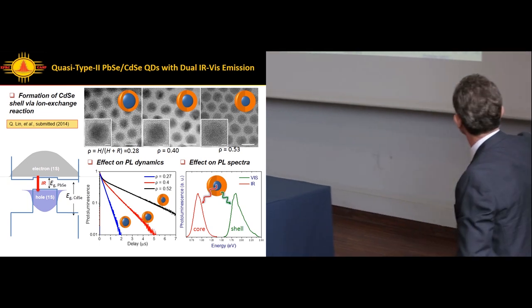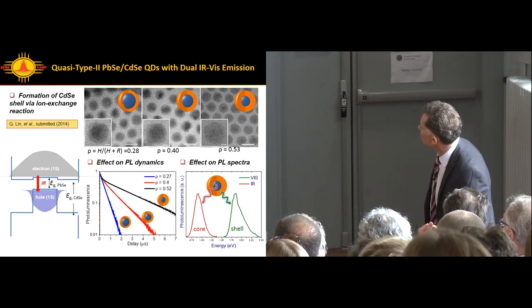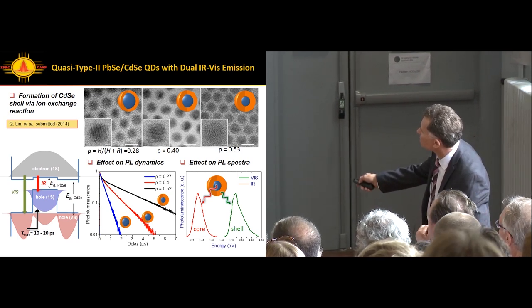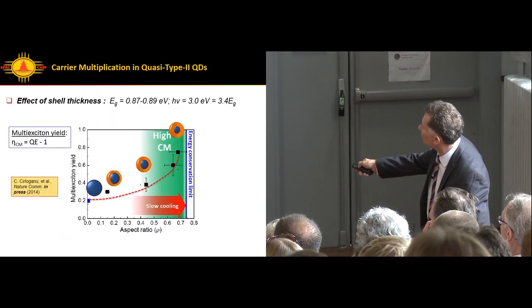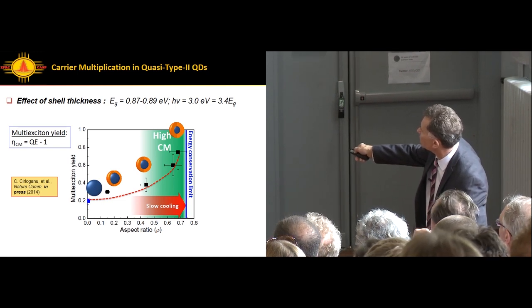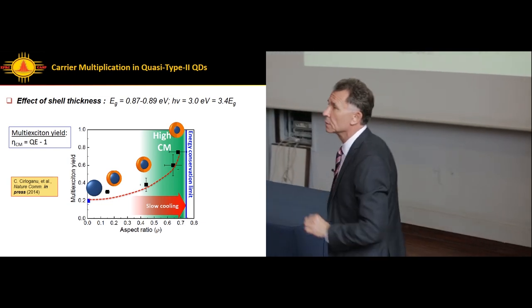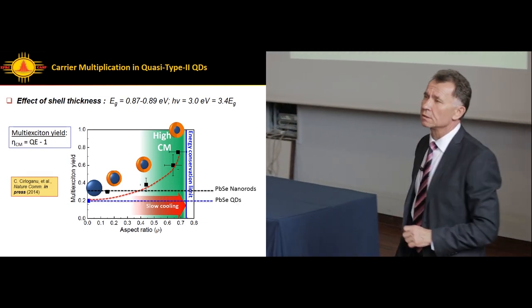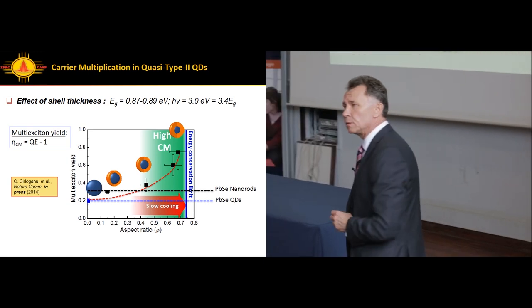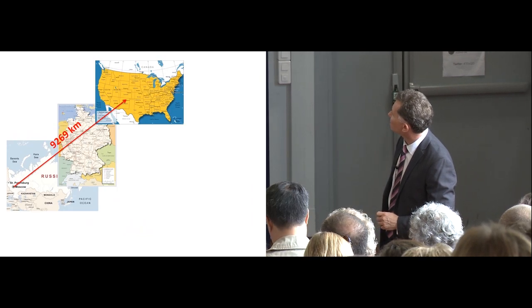Now we're building up the shell. We are looking at the multi-exciton yield starting just with plain lead selenide quantum dots, increasing the shell thickness from 20%. We are going first through 60%. Now we're entering the regime of slow cooling when we see the visible band in addition to infrared band. Quantum yield grows to 80%. Fourfold enhancement for the same energy gap. This is very interesting results. Give us new hopes that with quantum dots, we can potentially approach this ultimate limit in conversion of solar photons into electrical charges.